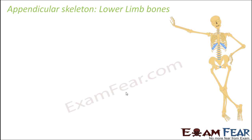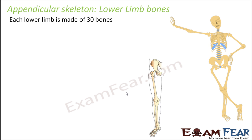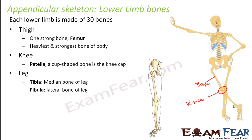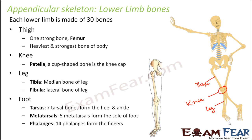Now let us look at the lower limb bones. Similar to the upper limb, we will talk about the legs part by part. The leg is divided into different regions: the topmost region is called the thigh, then the middle portion is the knee, then the leg, and finally the foot.